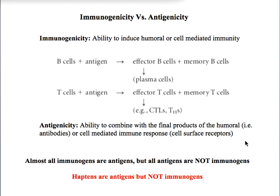We can conclude that almost all immunogens are antigens, but not all antigens are immunogens. A good example is a hapten. Haptens are very small molecules that can serve as antigens but by themselves do not evoke any immune response, and therefore they are not considered to be immunogens. However, for practical purposes, the terms immunogen and antigen are used interchangeably in most experiments.